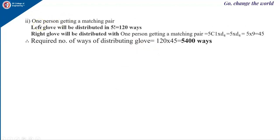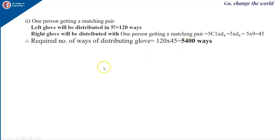For the same problem with exactly one person getting a matching pair: the left gloves are again distributed in 120 ways. Then the one person who gets a matching right glove can be selected in 5C1 equals 5 ways, and the remaining 4 must not get a matching pair, which is d4 equals 9. So there are 5 times 9 equals 45 ways for the right gloves. The total number of ways is 120 times 45 equals 5400 ways. If probability is asked, it is 5400 divided by 5 factorial times 5 factorial.